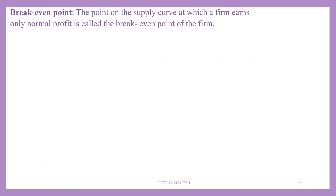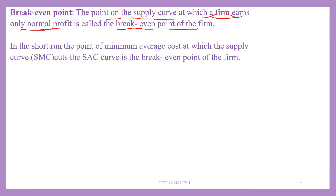Now let us discuss the breakeven point. The breakeven point is a point on the supply curve at which a firm earns only normal profit. In the short run, it is the point of minimum average cost (AC) at which the supply curve cuts the SAC curve. The supply curve is nothing but the short run marginal cost curve of a firm. Under perfect competition, a firm's marginal cost itself is the supply curve of the firm.